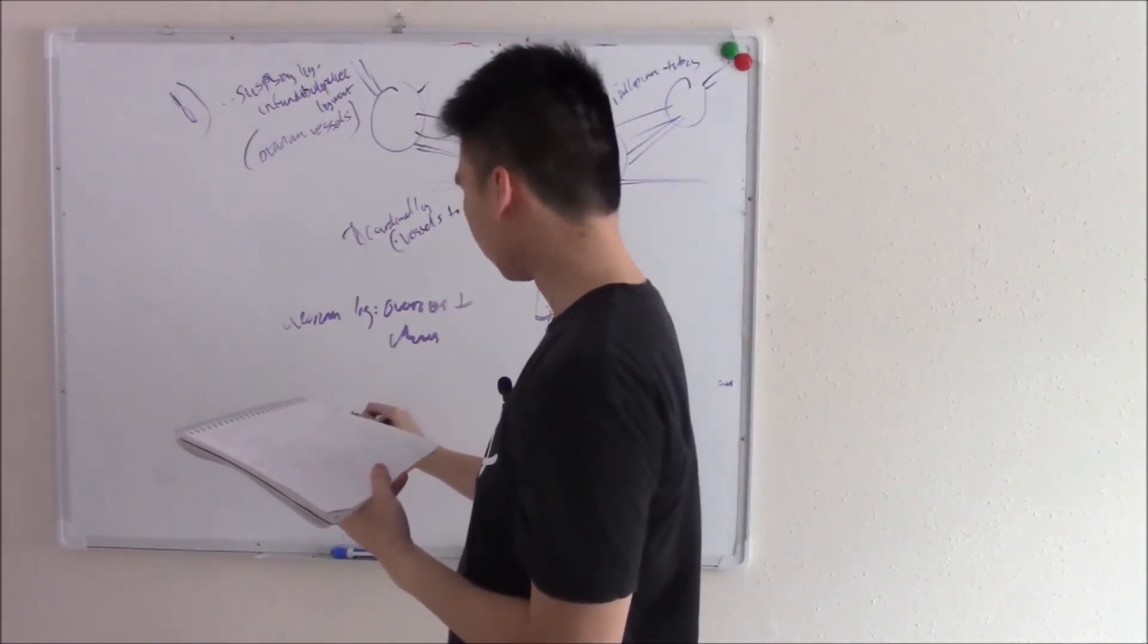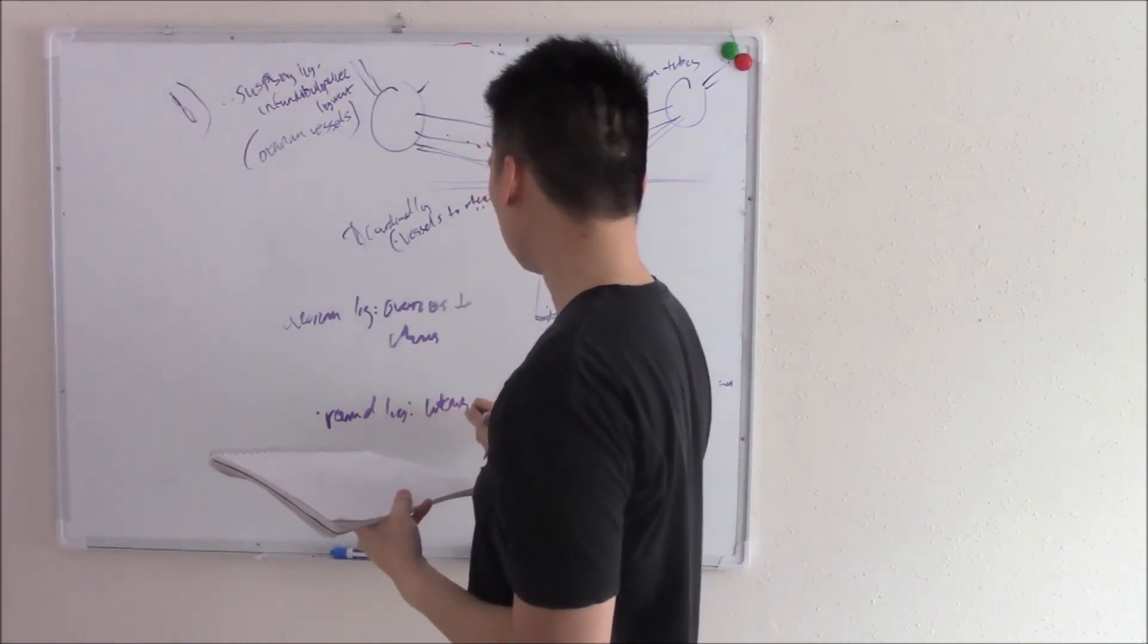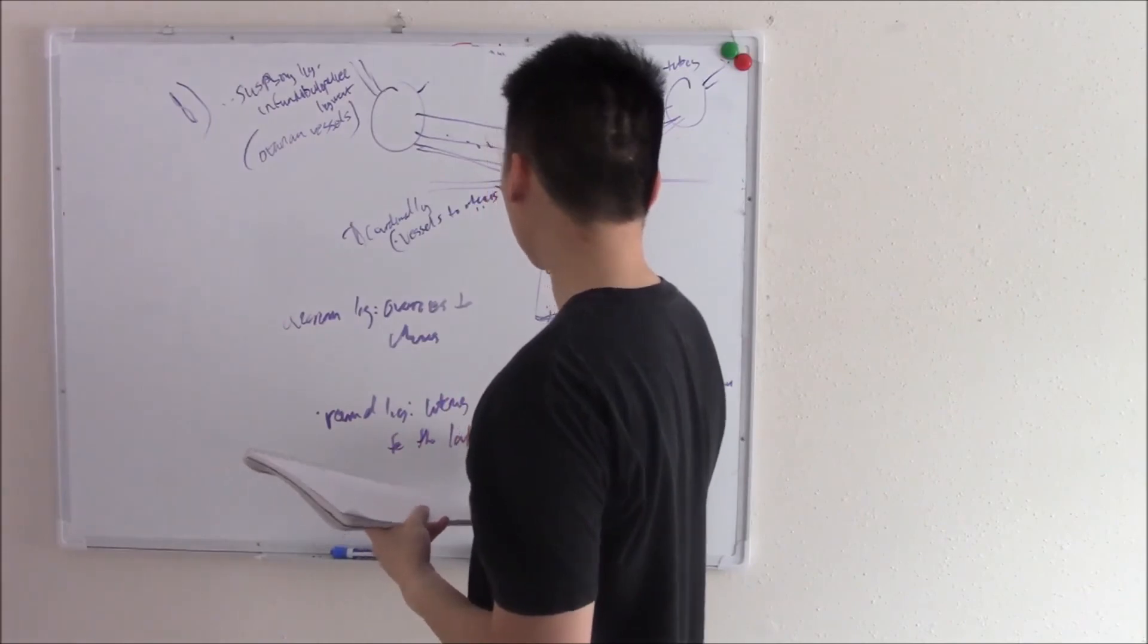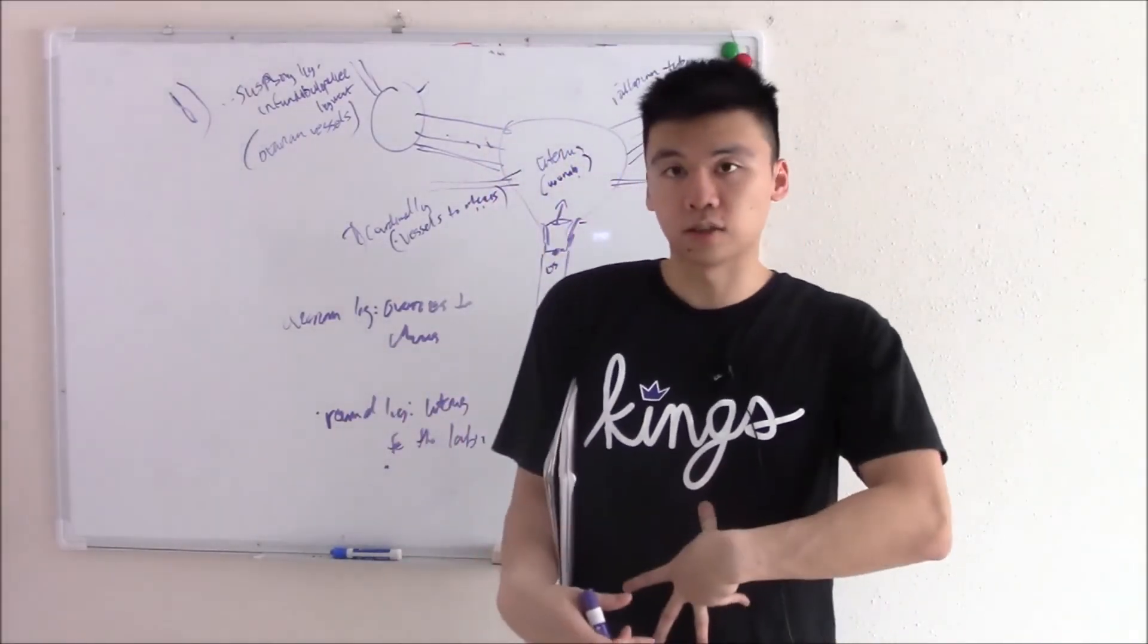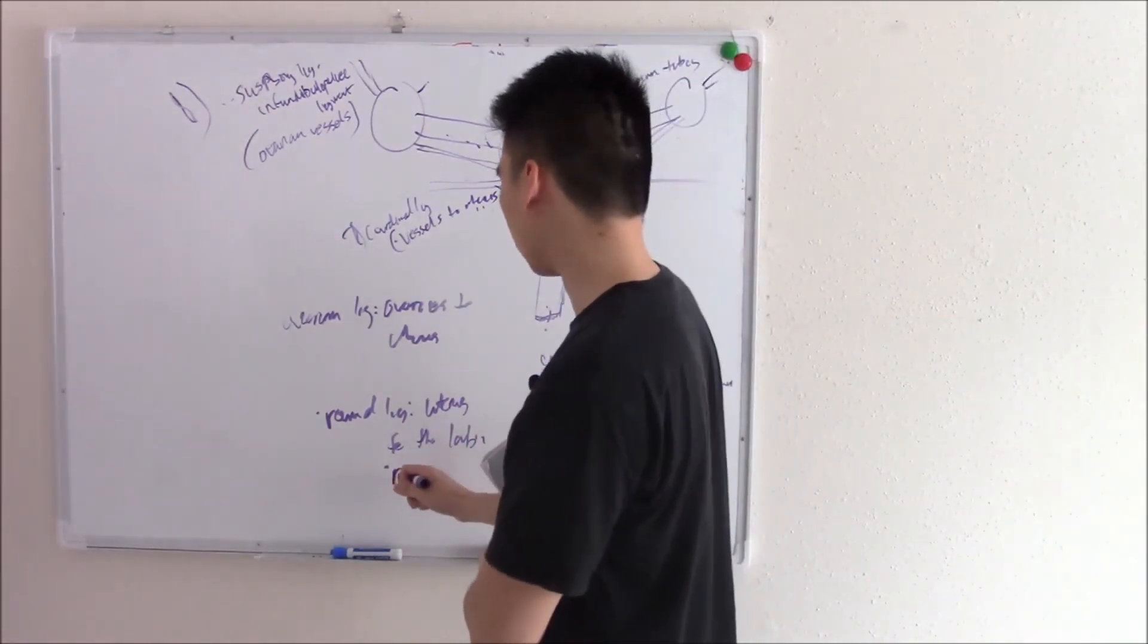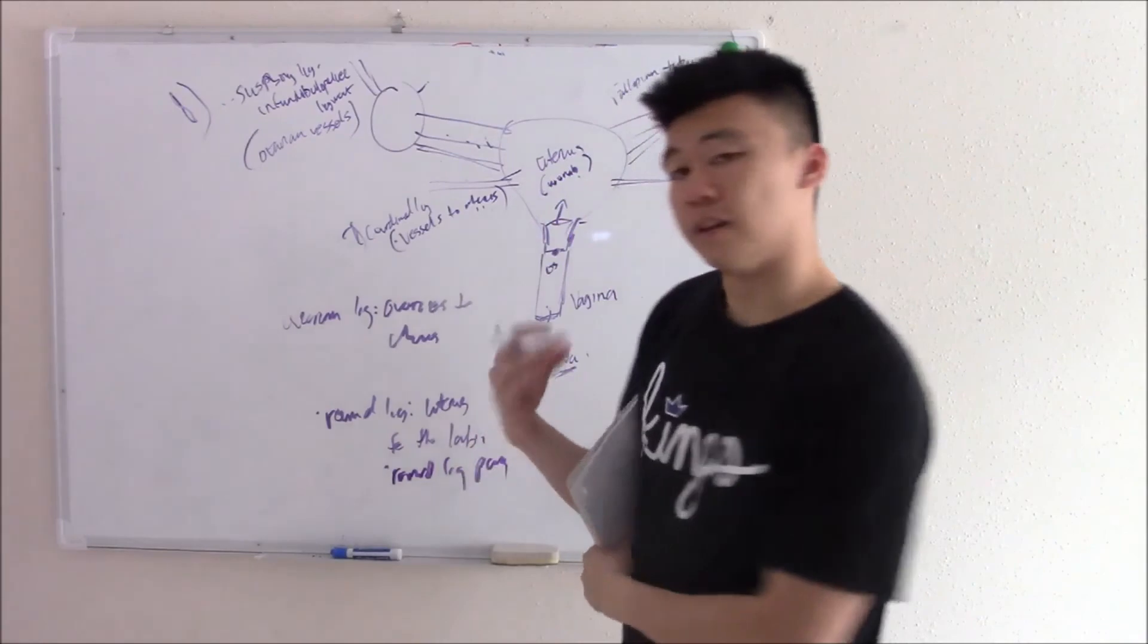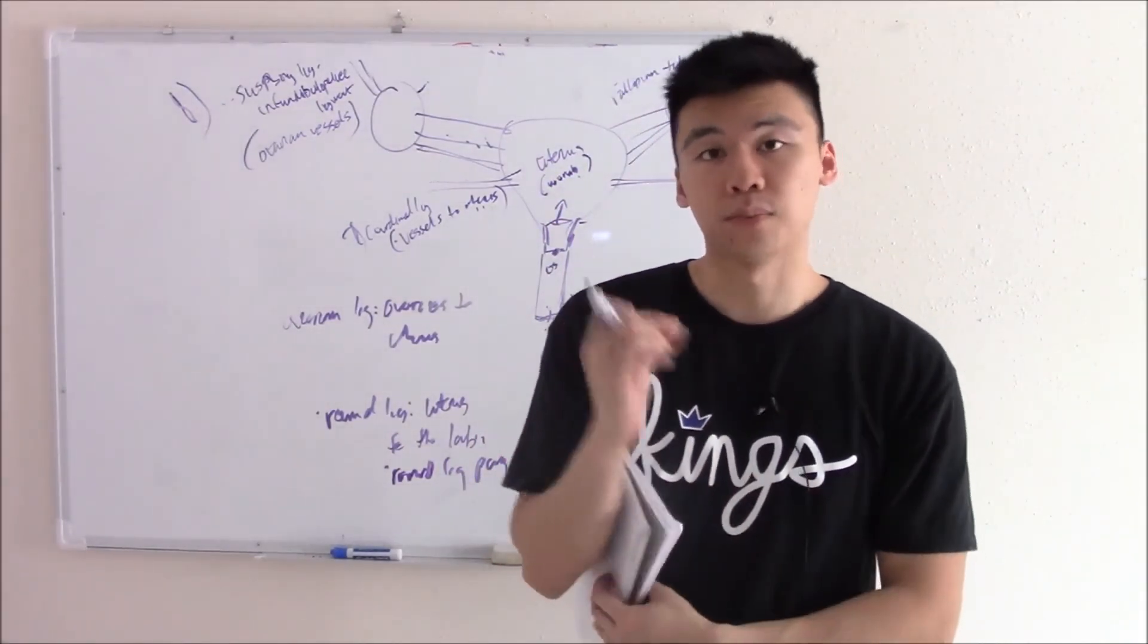The round ligament connects the uterus to the labia. This ligament is important during pregnancy because when you're pregnant, your uterus grows and it pulls on that ligament and can cause round ligament pain. A very common presenting complaint in pregnancy is that round ligament pain.